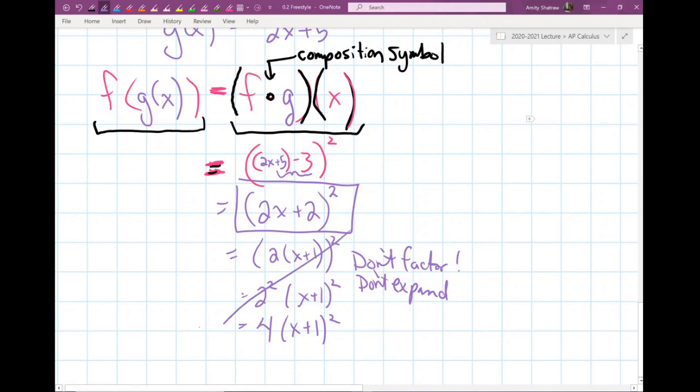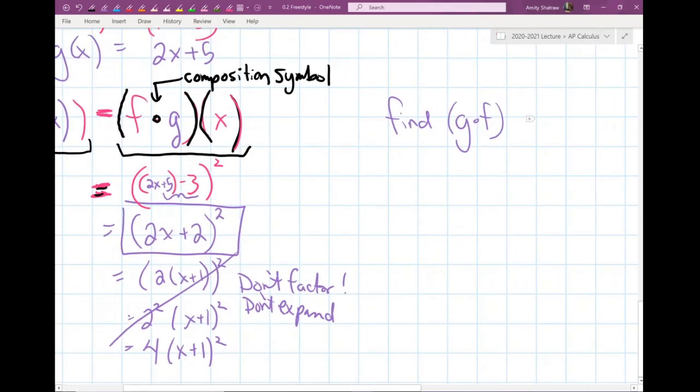That was F composed with G and I'd like you to try G composed with F. Send me an email. Let me know that you got it done with the answer and I will give you 5 points of extra credit. I will give you another 5 points of extra credit if you took notes while you did this video. So 5 points of extra credit for notes and 5 points of extra credit for finishing G composed with F. Find G composed with F of this and send me an email on it. There should be rewards when you do extra work.